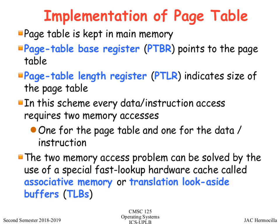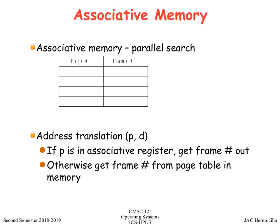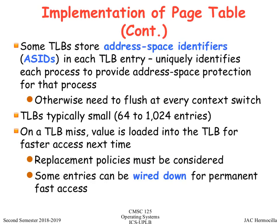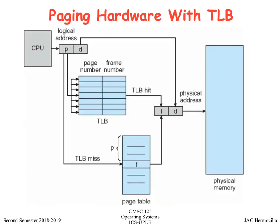How are page tables implemented? Usually we have a TLB which allows us to have a faster search for the mapping of the page number to the frame number. TLB is basically a cache that allows you to immediately get the frame number given the page number. The arrow represents simultaneous access or parallel access.